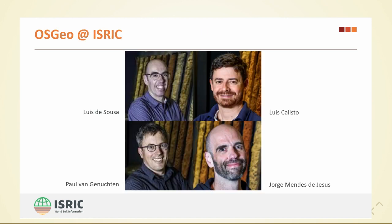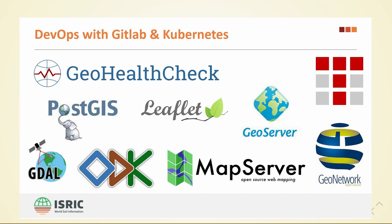At the conference you may see these people running around — that's us, the OSGO team at ISREC. George is not here unfortunately, but you may know him. This is a bit the stack that we have. We run a DevOps environment on Kubernetes and we have a lot of open source software that we're using.